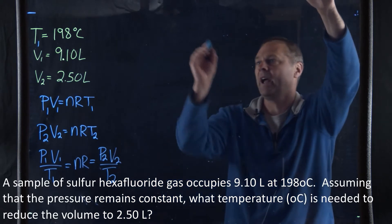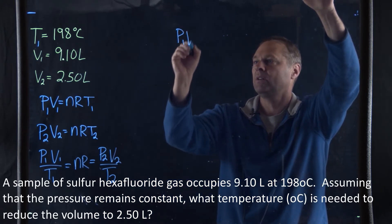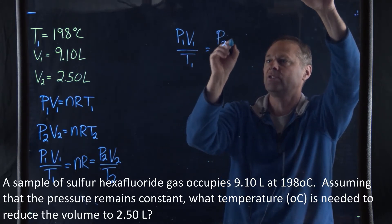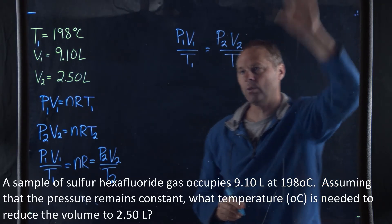So the equation we have now is P1V1 all upon T1 is equal to P2V2 all upon T2 is the equation we've got.